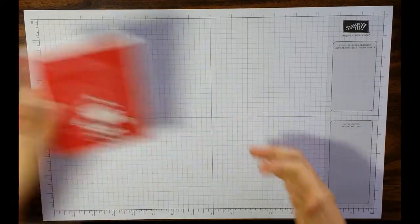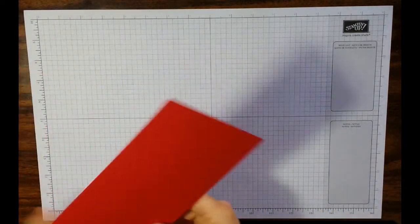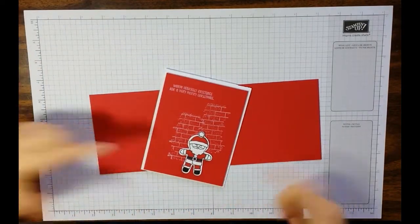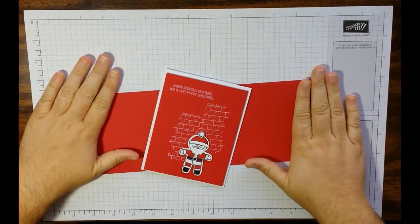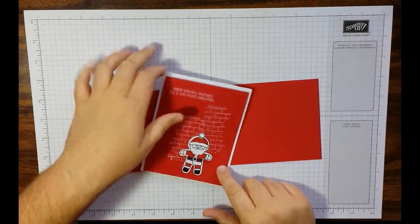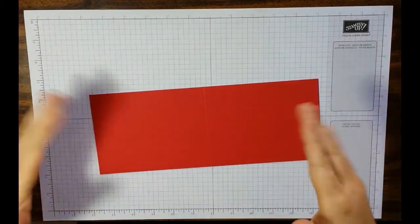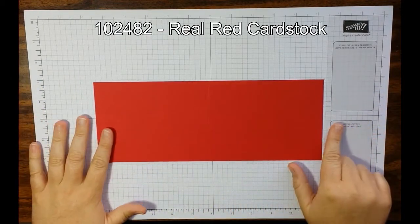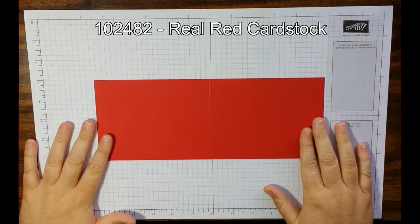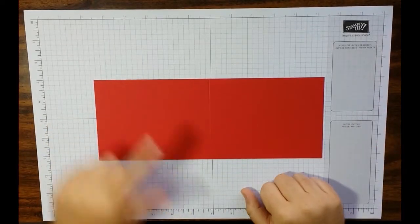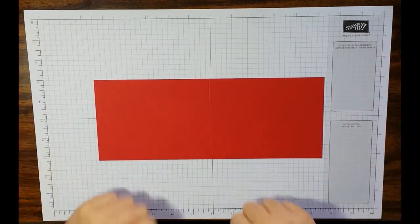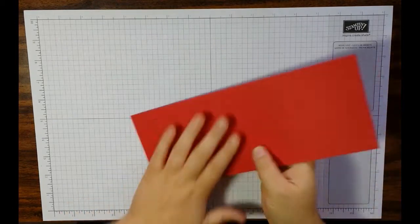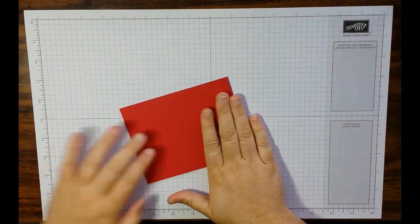What are we going to need today? We're going to start with a piece of real red cardstock. The background is going to be real red and the top piece is going to be Whisper White this time. So, real red cardstock. It's four and a quarter inches wide, 11 inches tall. Just basically take your 8.5 by 11, cut it smack down in the middle.